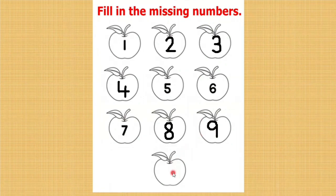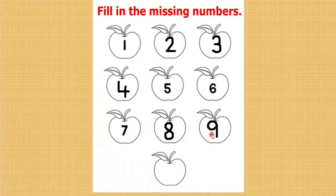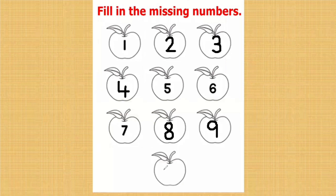After 9, the number is missing. What comes after 9? To do this, you have to keep 9 in your mind and do the forward counting from 1. 1, 2, 3, 4, 5, 6, 7, 8, 9, 10. What comes after 9? 10. Let us write. After 9, 10 will come.